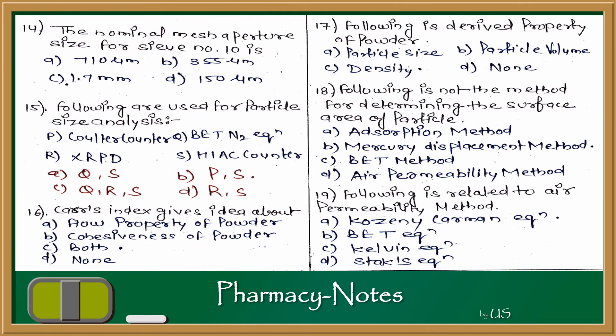Question 14: Nominal mesh aperture size for sieve number 10 is? Referring to the sieve table for sieve number 10, the nominal aperture size is 1.7 mm. The answer is C — 1.7 mm.